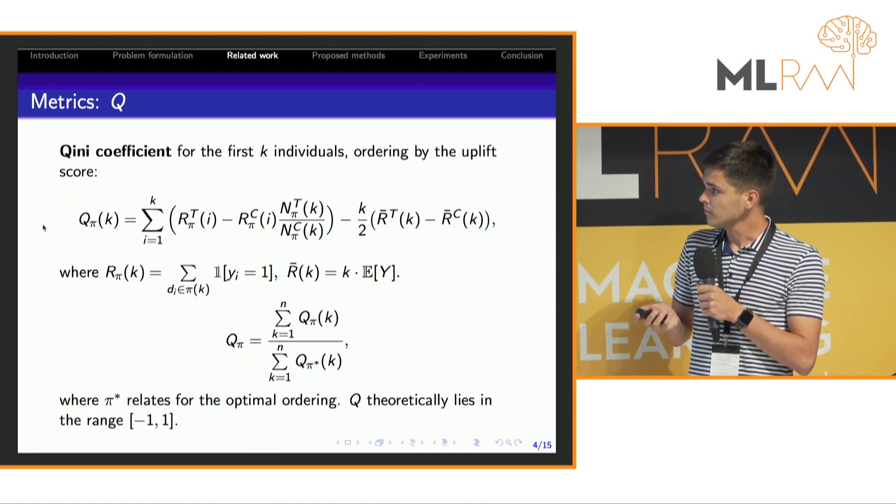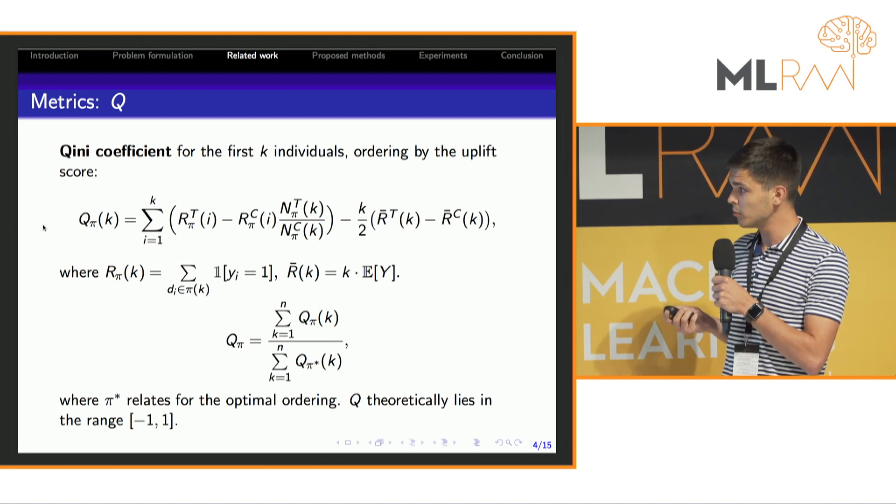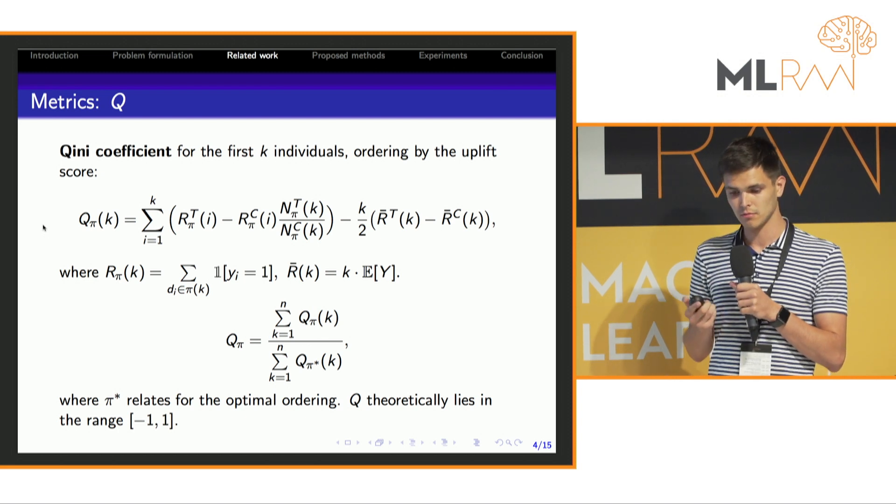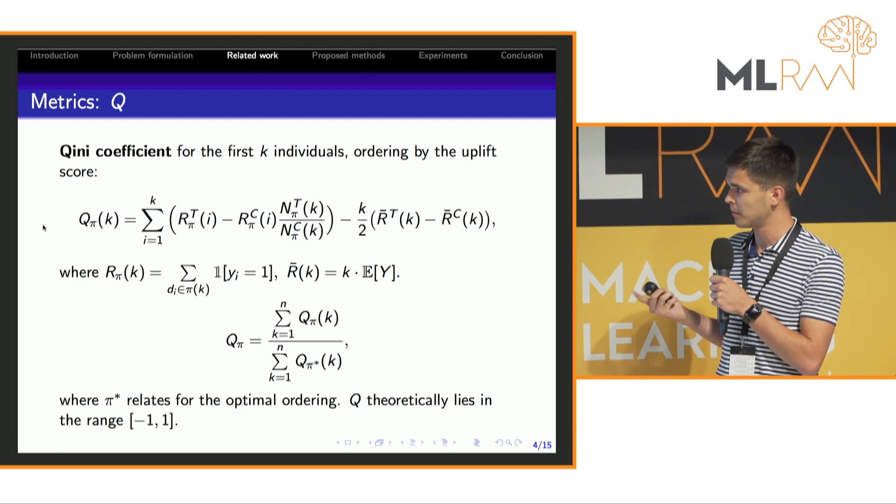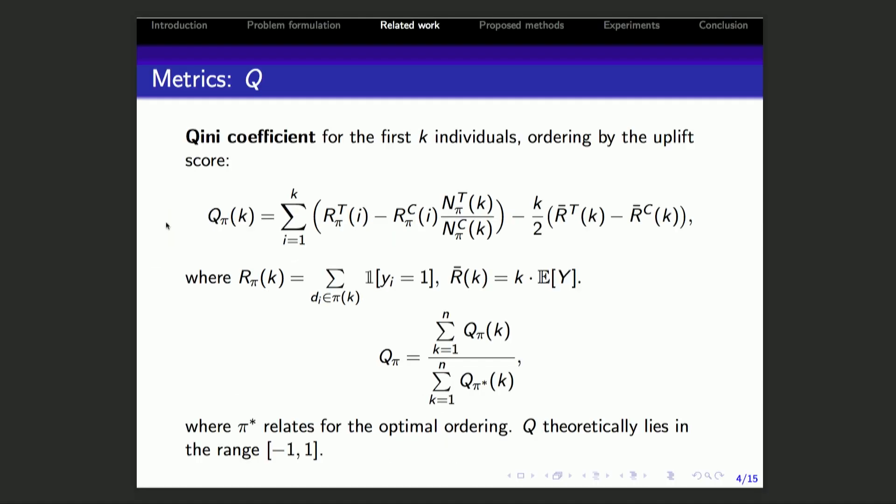Speaking about metrics, metrics is an important part in uplift prediction problem because they differ from basic classification metrics as they're based on ordering of the customers according to their uplift scores.